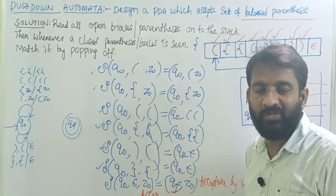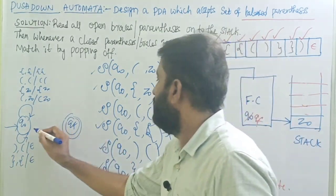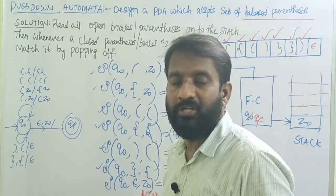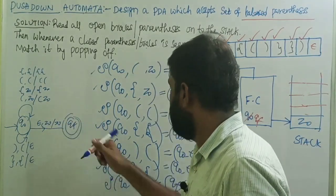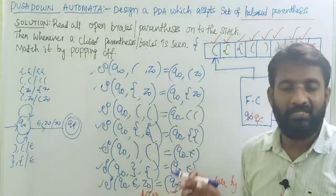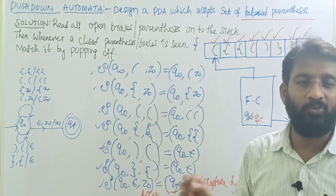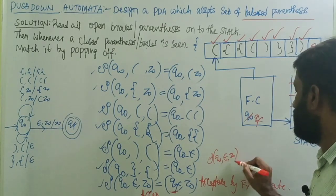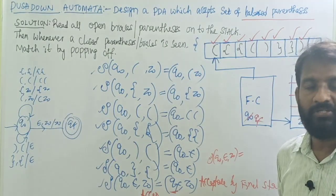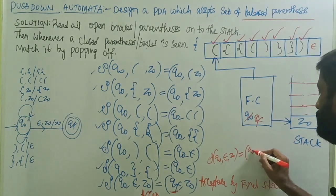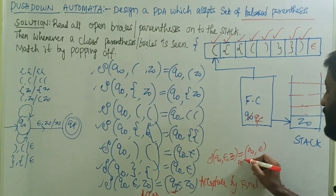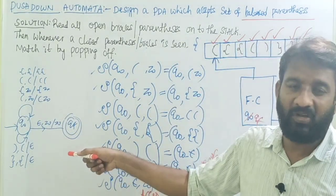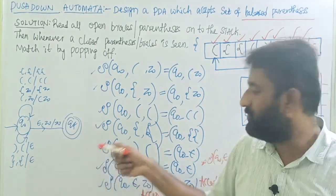When all input symbols are exhausted, with epsilon as input and z0 on top of the stack, remain on q0 without any push or pop, then move to final state qf. If you also want acceptance by empty stack, add the transition δ(q0, ε, z0) = (q0, ε) to remove z0. However, adding that transition makes this non-deterministic, so for a deterministic design, do not add it. Draw based on problem requirements.